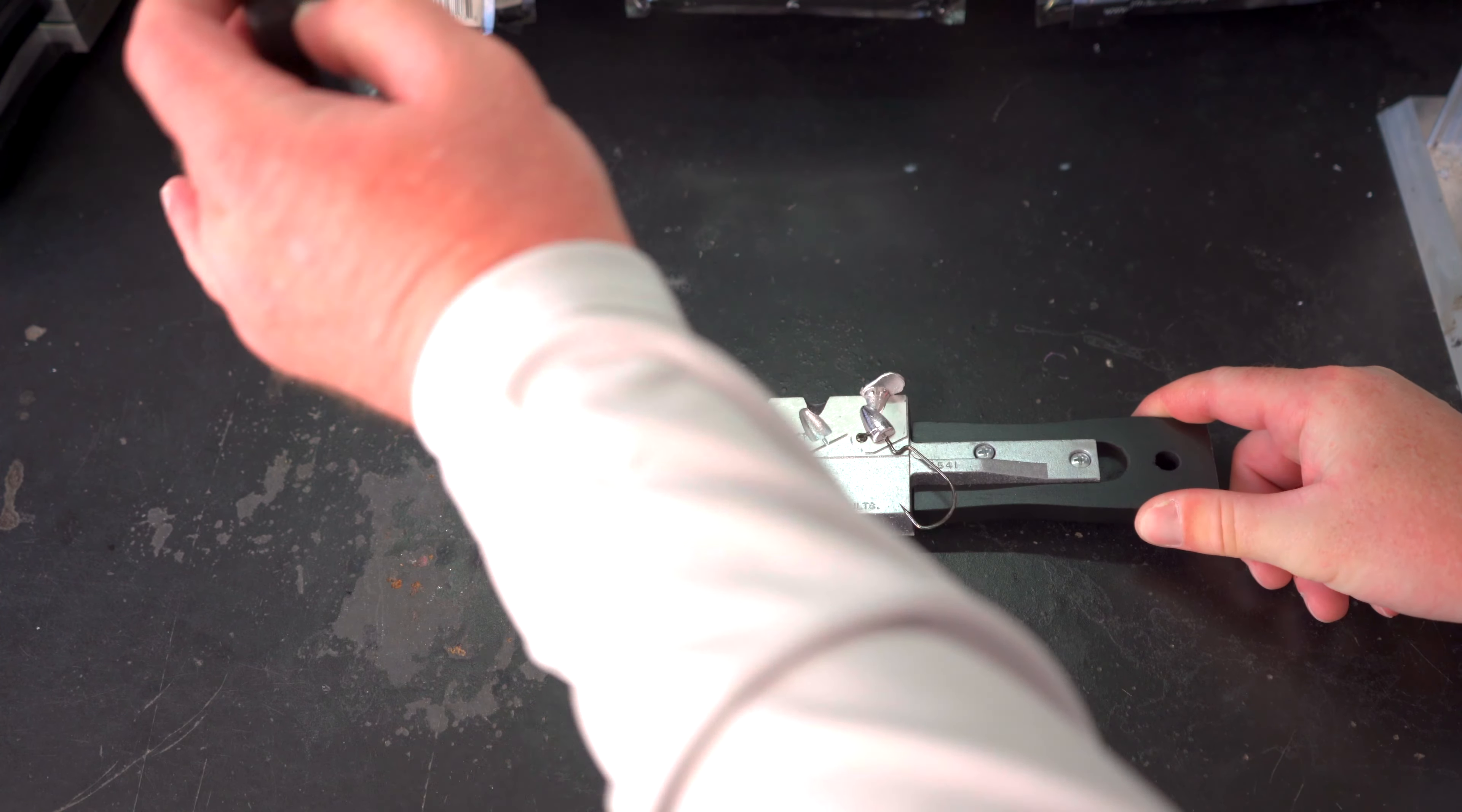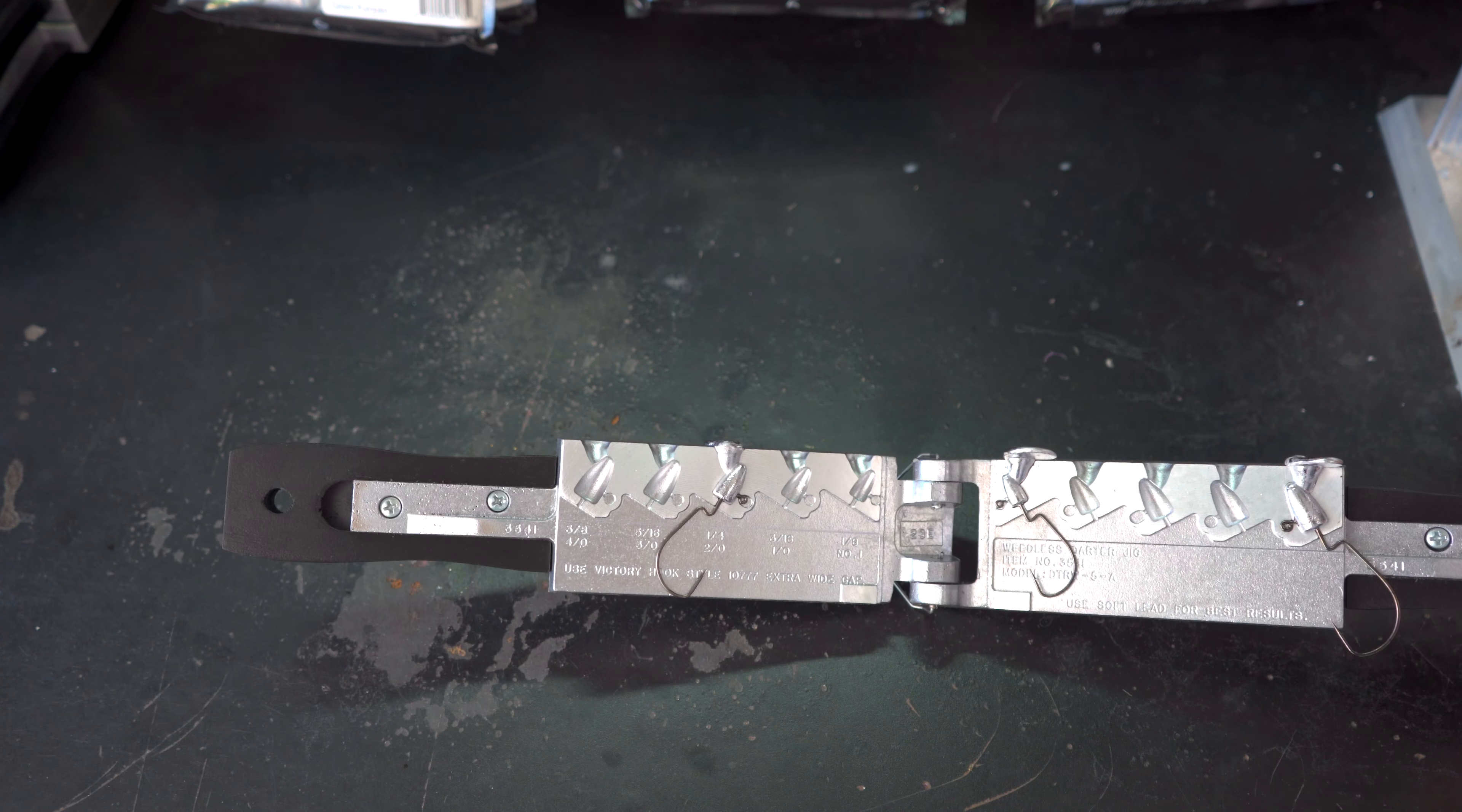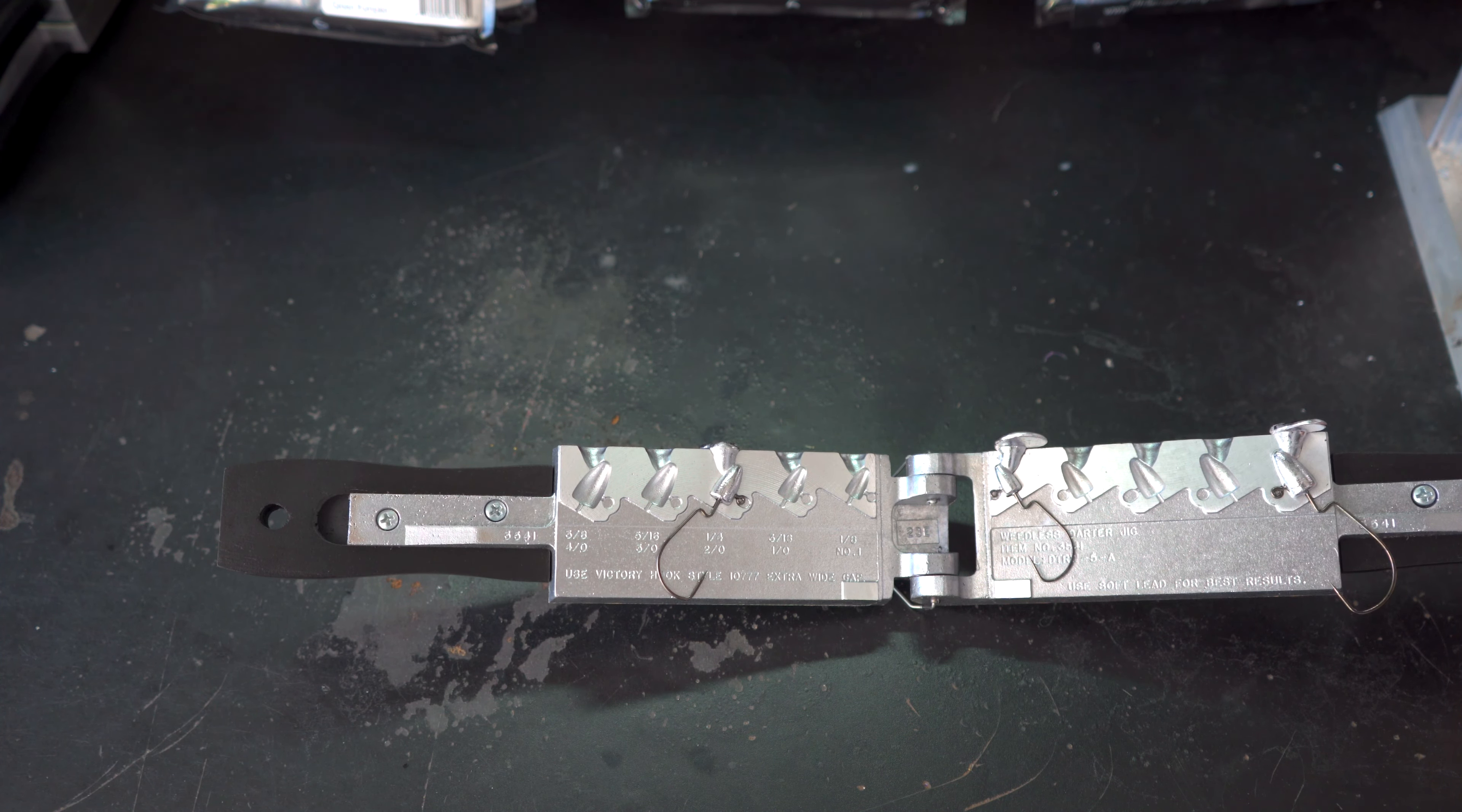Now we're going to open up our mold. Check out our weedless darter jigs. They turned out really good. Here's our three-eighth and the one-eighth and then over here we have our quarter ounce. All of them turned out really well. This mold pours very well and very easy. Now we're going to take a pair of pliers and pull these out of our mold.